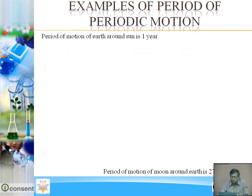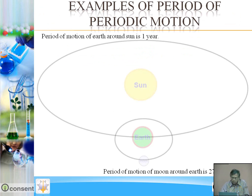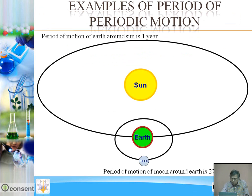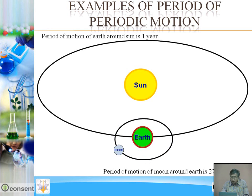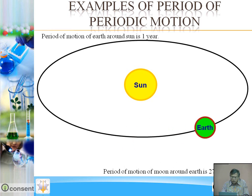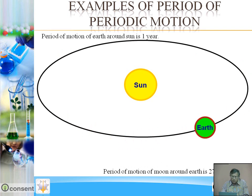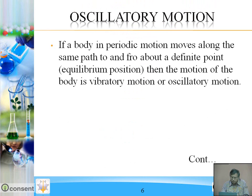Examples of period of periodic motion. This moon revolves around the earth; the period of motion of the moon around the earth is 27.3 days. The earth revolves around the sun; the period of motion of earth around the sun is 1 year.